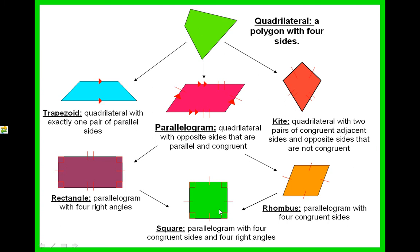A square can be considered a rectangle and a rhombus, but more specifically it is a parallelogram with four congruent sides and four right angles. A square can be a rhombus because it is a parallelogram with four congruent sides, but a rhombus may not always be a square if it doesn't have four right angles.